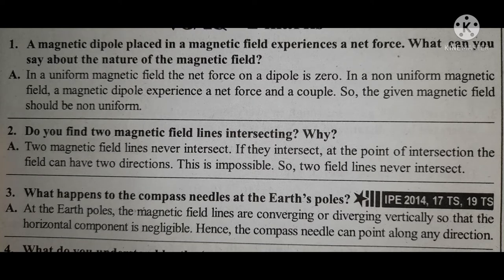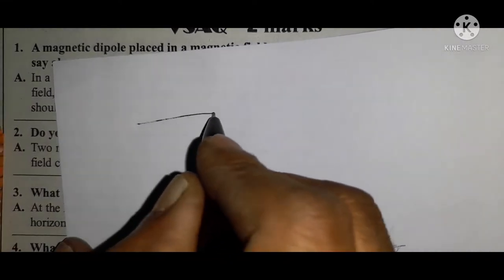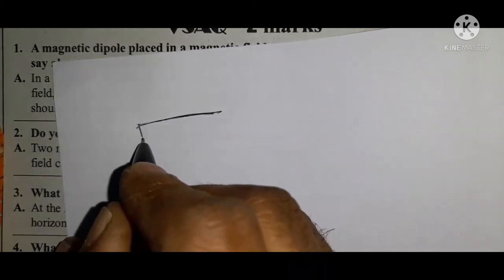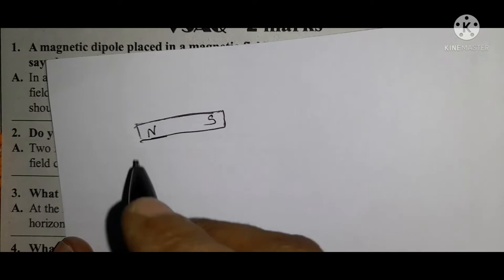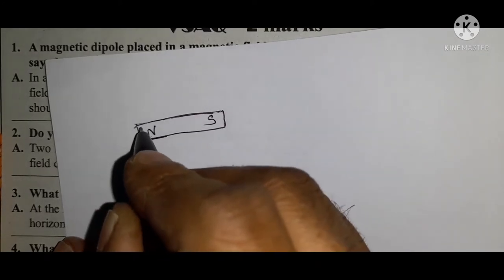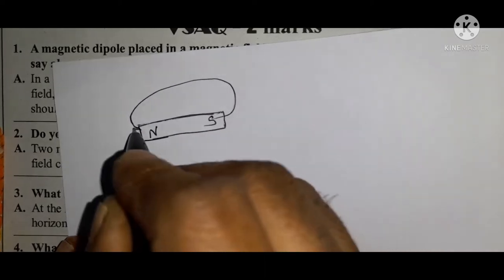Question two: Do you ever find two magnetic lines intersecting? Before discussing this, you first need to know that if a magnet has a north pole and south pole, and you draw the magnetic lines for it, they appear like this.